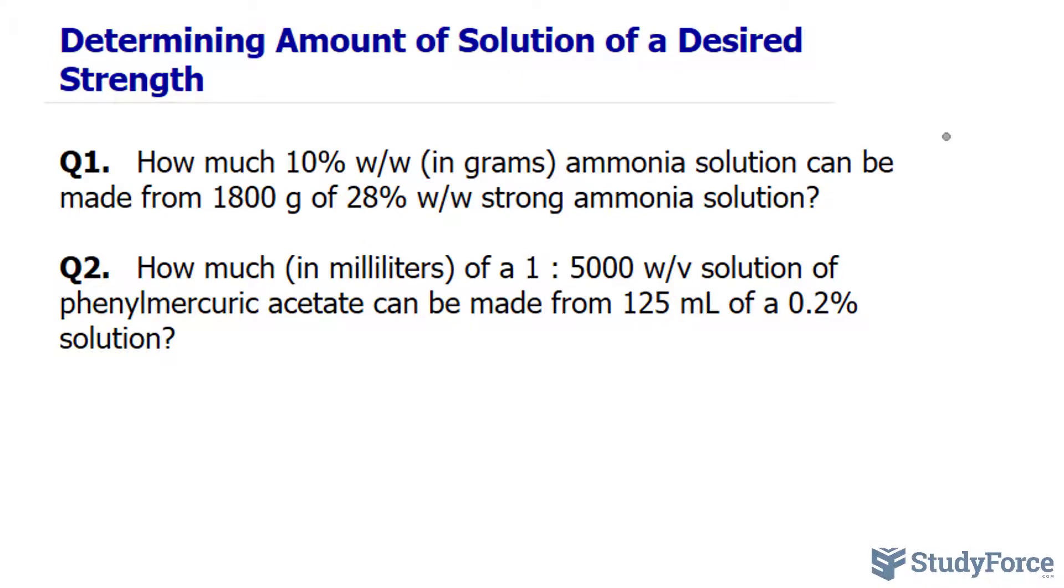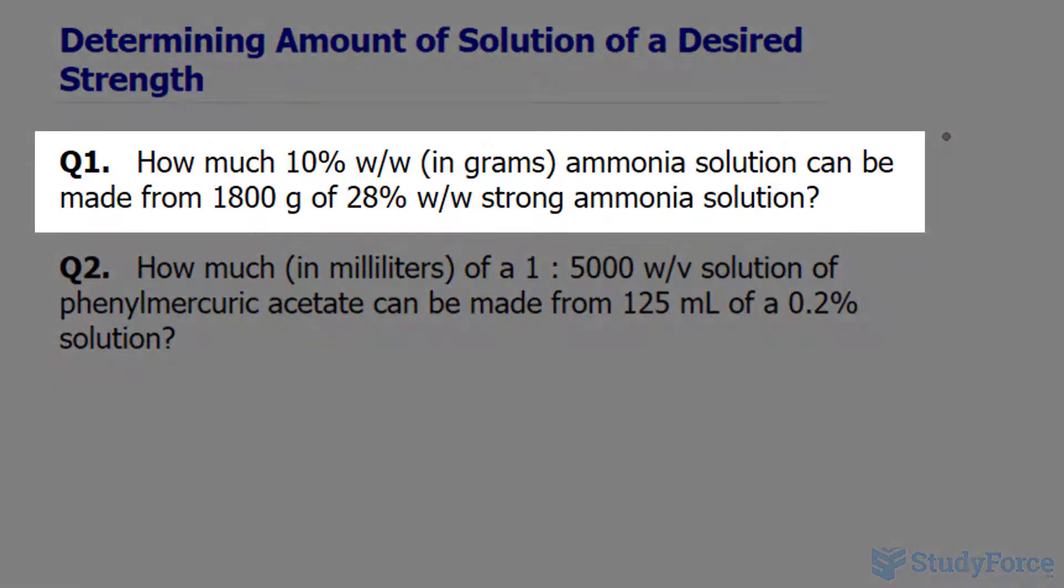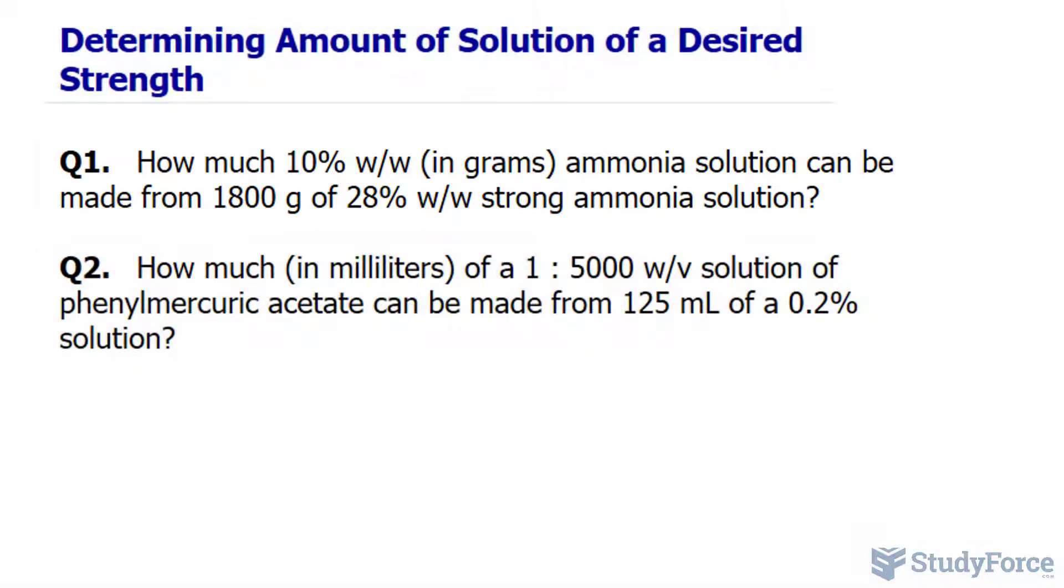Question number one reads, how much of a 10% weight per weight in grams ammonia solution can be made from 1,800 grams of 28% weight per weight strong ammonia solution? The quickest and easiest way to answer a question like this is to use a formula that was introduced in one of our previous videos.